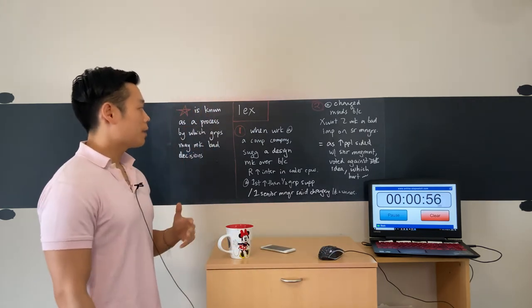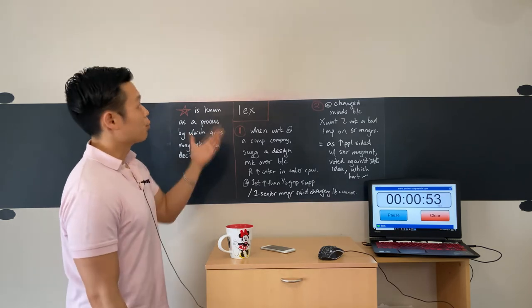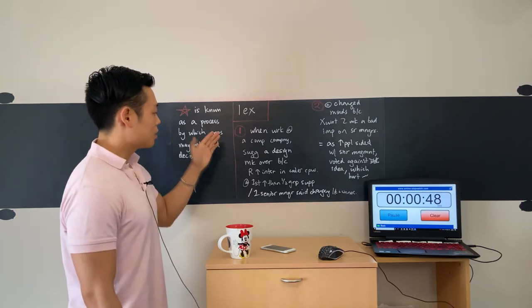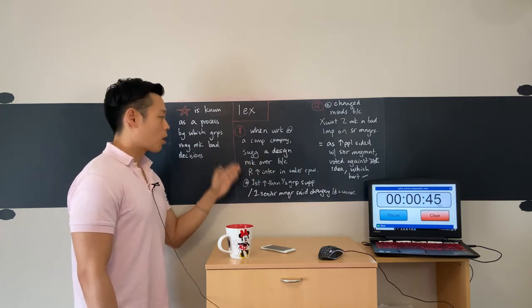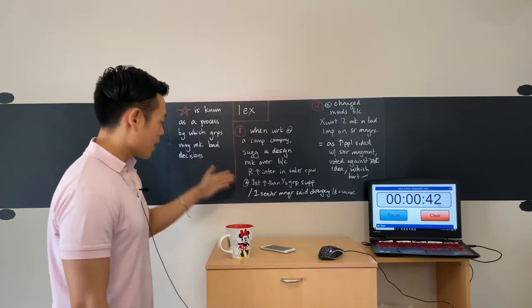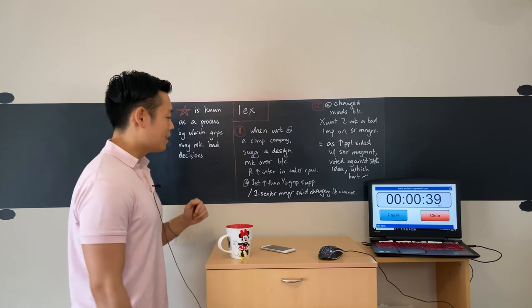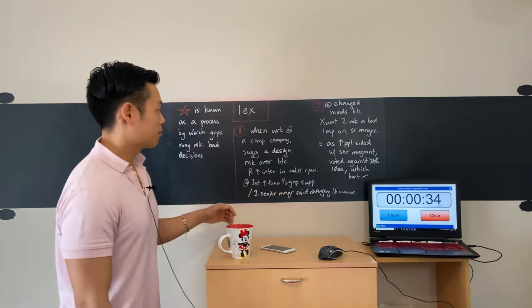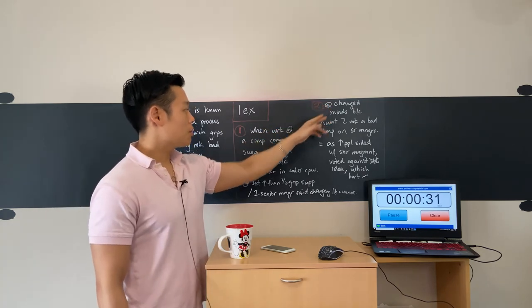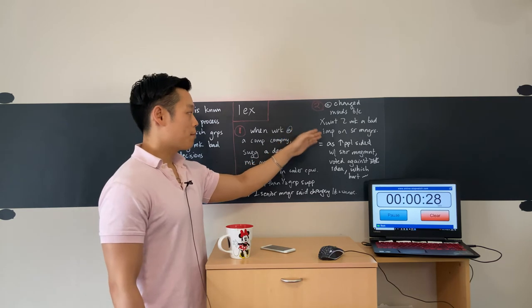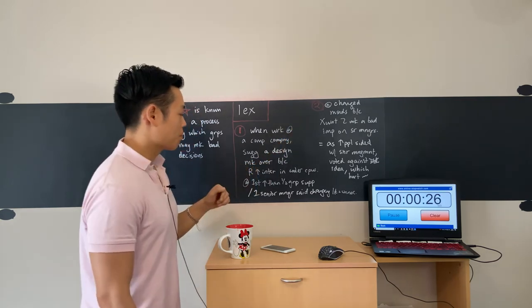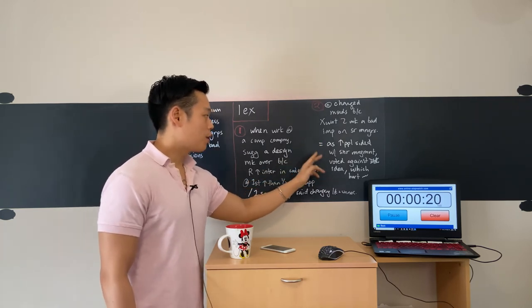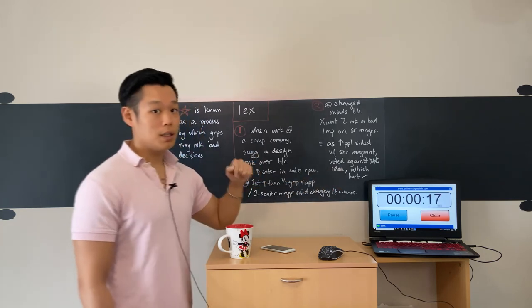The professor elaborated on a specific example of himself to explain the concept of groupthink. To begin with, when the professor worked at a computer company, he suggested a design makeover because customers are more interested in cooler computers. At first more than half of the group supported his idea, but one senior manager said that changing look is unnecessary. As a result, many people changed their minds simply because they didn't want to make a bad impression on the senior managers. Needless to say, as more people sided with senior management, even the professor voted against his own idea which ultimately hurt the company in the end.